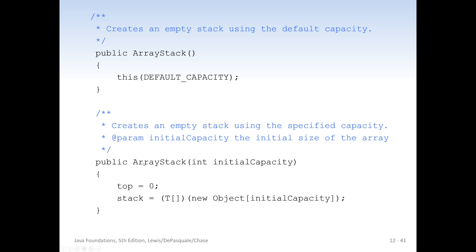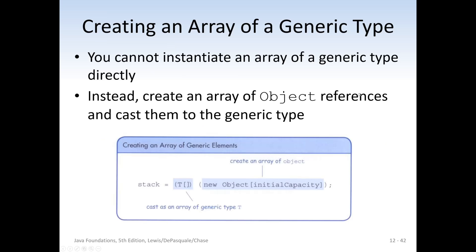If they don't pass in an initial capacity, we call the constructor that does take an initial capacity and pass in the default capacity. We don't want to write the constructor logic twice because if we make a change, we'd have to update two constructors — that's a maintenance problem. So we call the parameterized constructor from the no-arg constructor, passing the default capacity. This is a really common pattern with constructors. Note: you can't instantiate an array of a generic type directly, so you have to create an array of Object references and cast to the generic type.